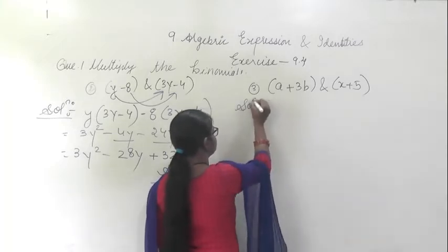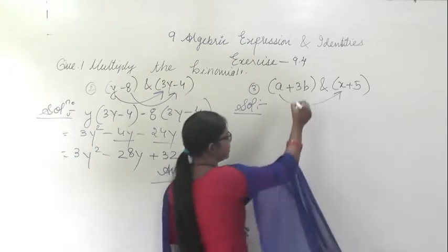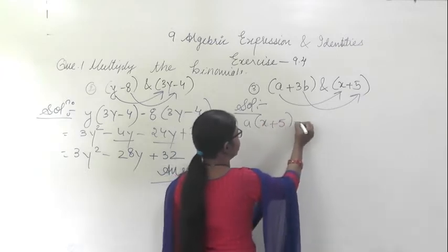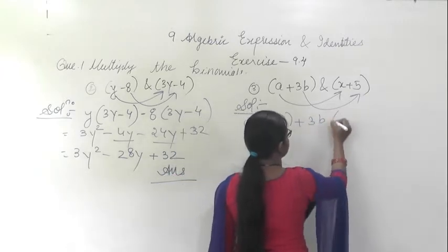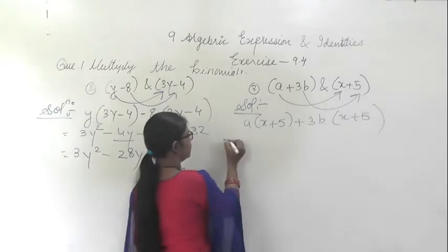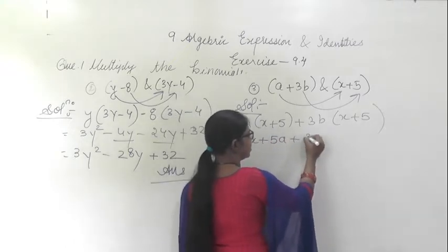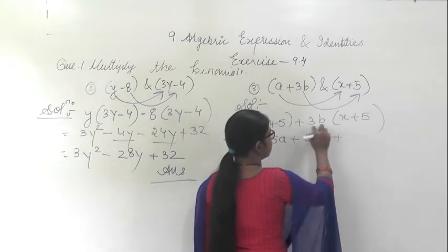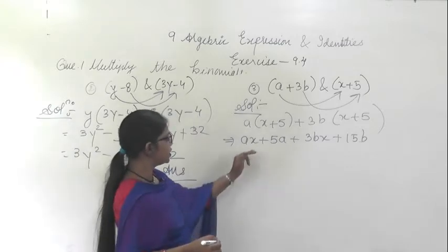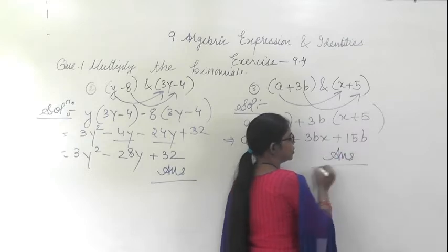Similarly, in the third question, first this a will be multiplied with the whole bracket, then this b will be multiplied with the whole bracket. Write down: a into (x plus 5) plus 3b into (x plus 5). Multiply inside: a into x is ax, plus 5a, plus 3bx, plus 15b. All terms are unlike terms, so we finish the answer here.